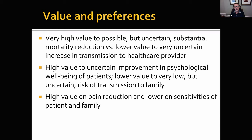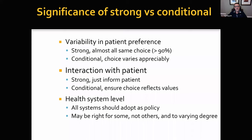They put a high value on the uncertain improvement in the psychological well-being of patients who have more access to caregivers, and a lower value on the very low but uncertain risk of transmission to the family. They also put a high value on pain reduction and a lower value on sensitivities of patient and family when, for instance, giving narcotics to a patient suffering from Ebola. That's one set of values and preferences — you could have different ones leading to different recommendations. WHO recognizes the importance of being explicit about the values and preferences underlying recommendations.